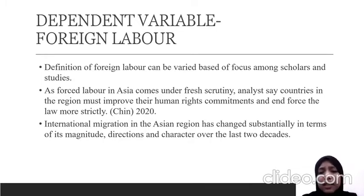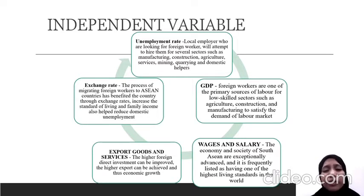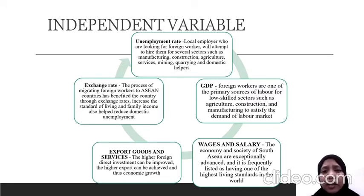International migration in the Asian region has changed subtly in terms of magnitude, direction, and character over the past two decades. For independent variables, we chose five: unemployment rate, GDP, exchange rate, export goods and services, and wages and salaries. For the unemployment rate, local employers looking for foreign workers attempt to hire them for several sectors such as manufacturing, construction, agriculture, service, mining, quarrying, and domestic helpers.